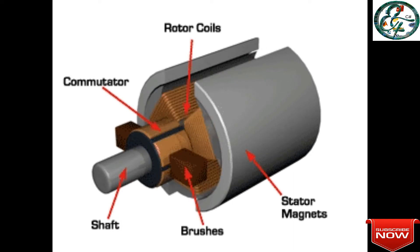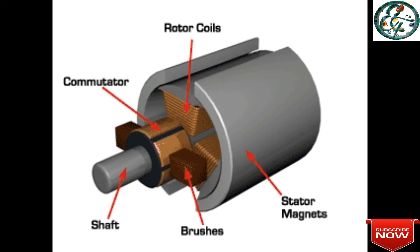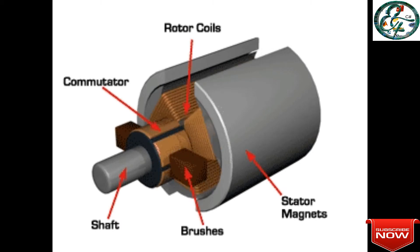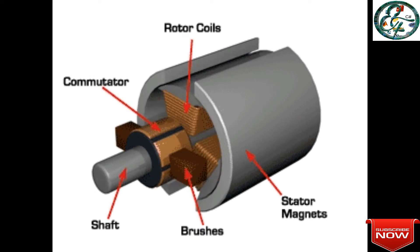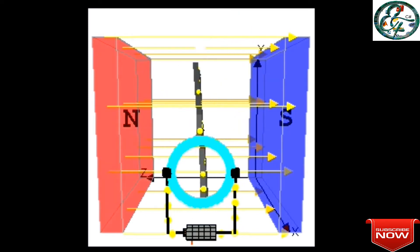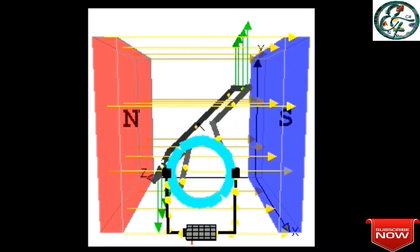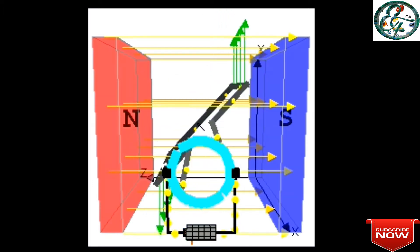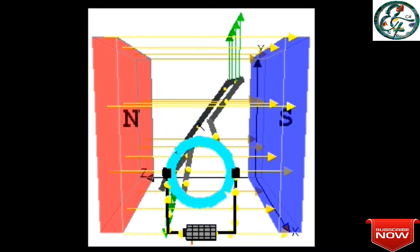When we supply power, we get energy. Let's see how the magnetic north and south poles are arranged. Let's see how the rotor is in the environment. We use an external brush to supply power to the rotor coil. This is a permanent magnet — we can say it's a static magnet.